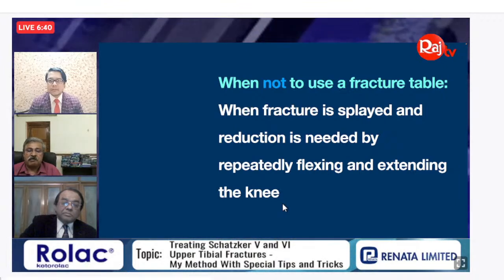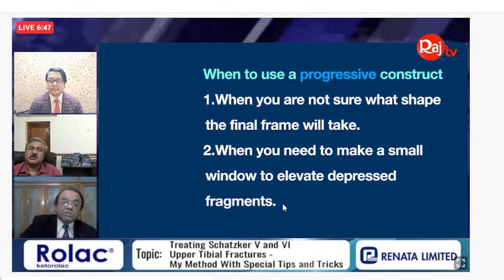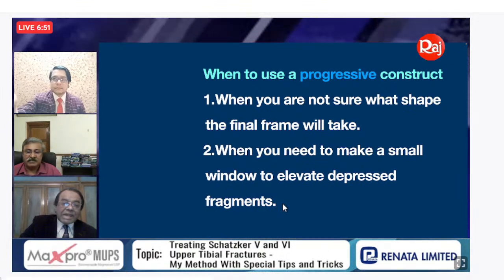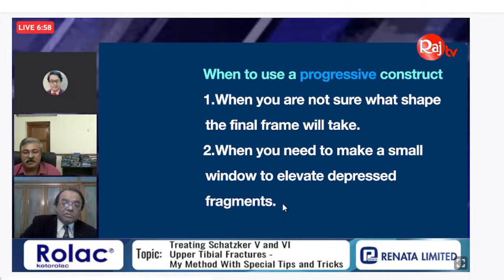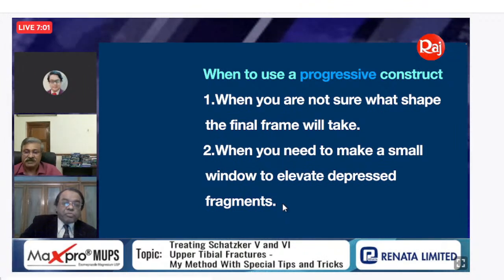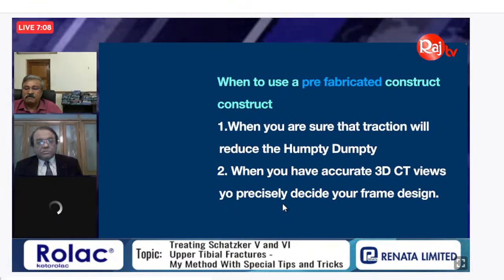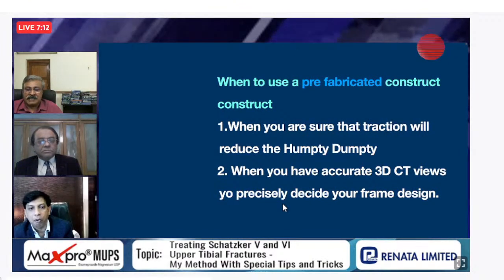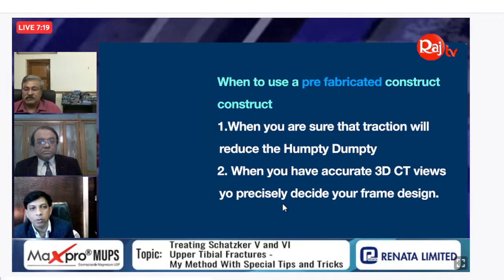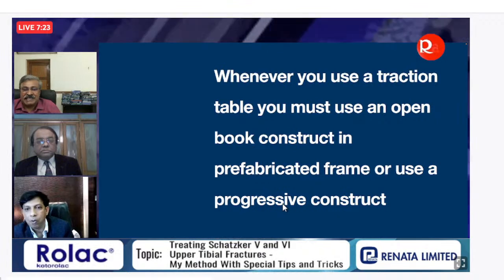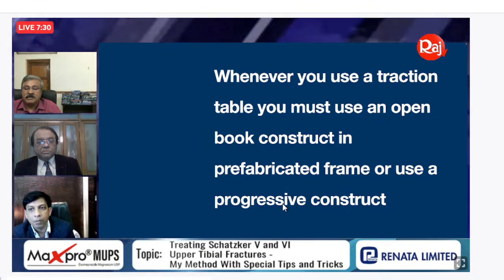Do not use a fracture table when reduction is needed by repeatedly flexing and extending the knee. Use a progressive construct when you are not sure what shape the final frame will take, when you need to make a small window to elevate depressed fragments, or when you need to move the leg repeatedly to flex and extend it. Use a prefabricated construct when you are sure traction will achieve reduction, and when you have accurate 3D CT views. Whenever you use a traction table, you must use an open-book construct in a prefabricated frame, or use a progressive construct.